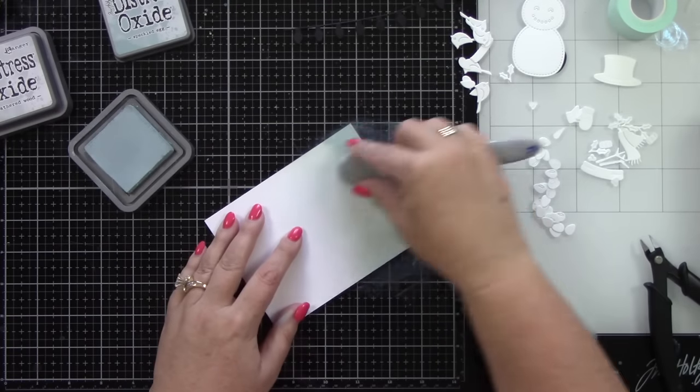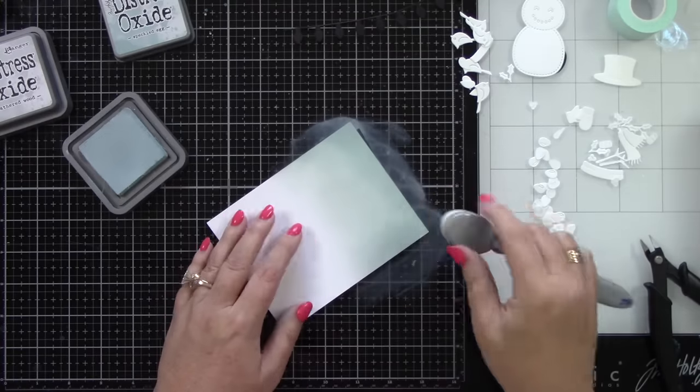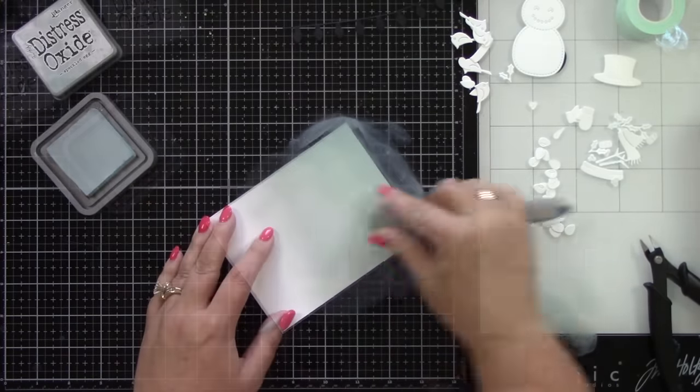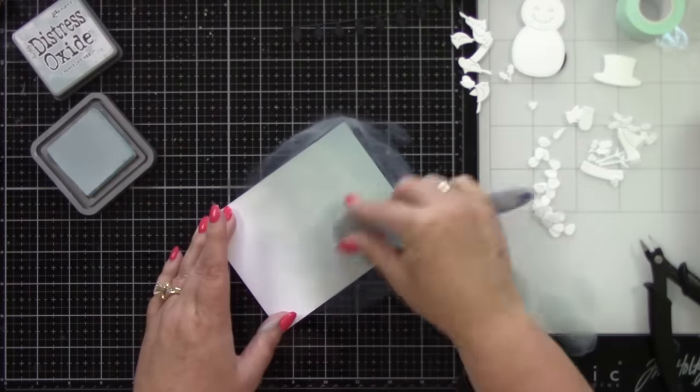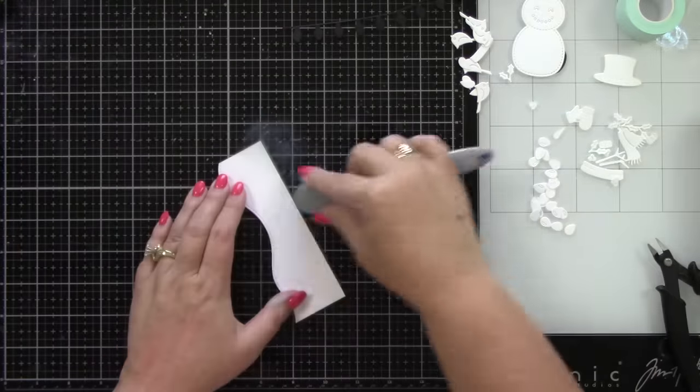For my background piece, this is a piece of A2 size white cardstock. I am going to ink blend it with Speckled Egg Distress Oxide ink. Not all the way down because I'm not going to see the whole bottom.